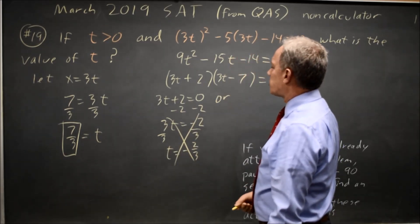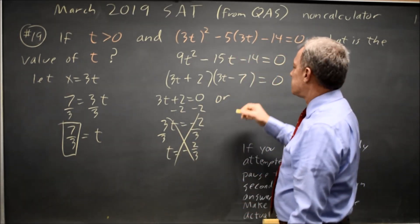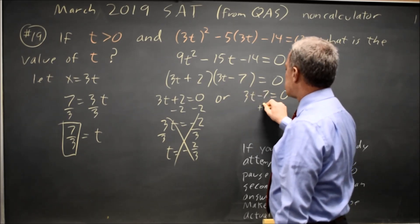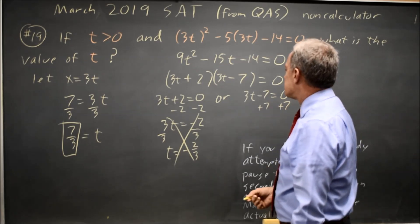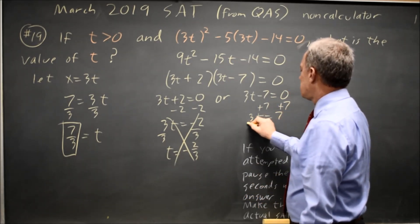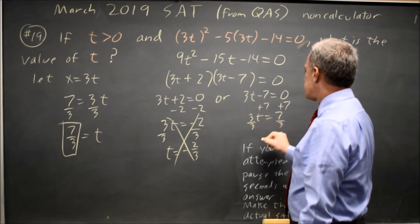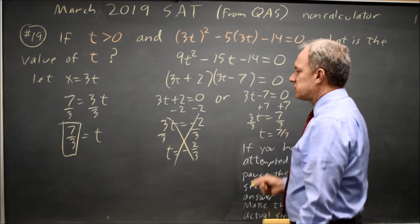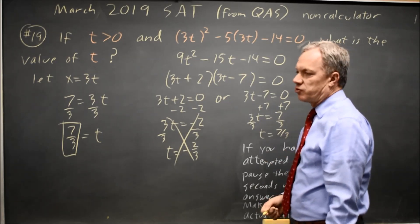Or, if a product equals 0 and the first factor is not 0, the second factor equals 0. So 3t minus 7 equals 0, add 7 to both sides, always do the same thing to both sides of an equation. 3t equals 7, divide by 3, since t is multiplied by 3, I divide by 3 to get t equals 7 thirds, which is the answer I found before.